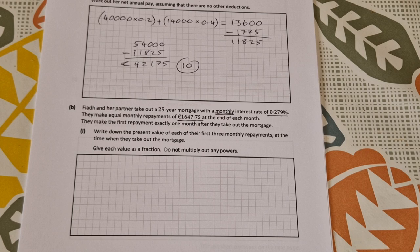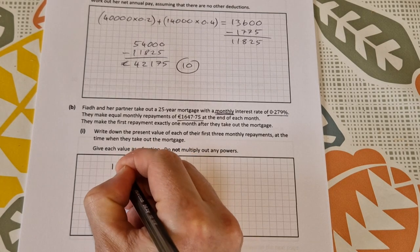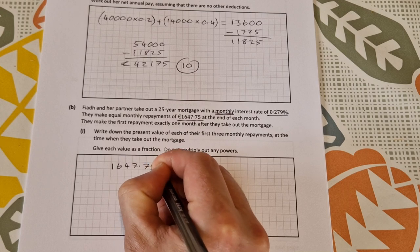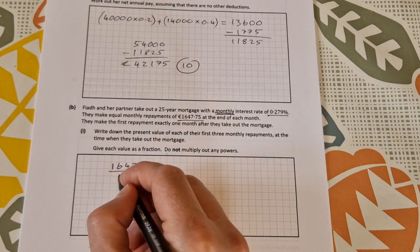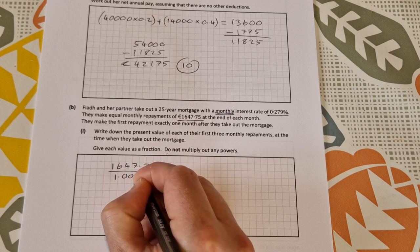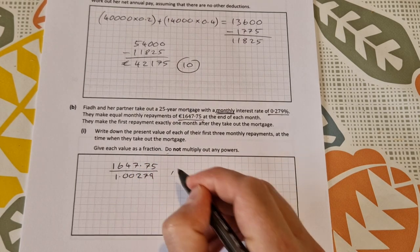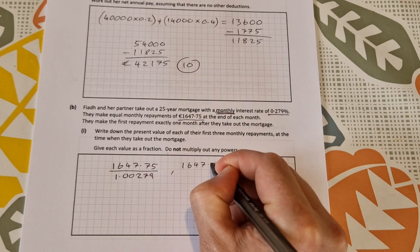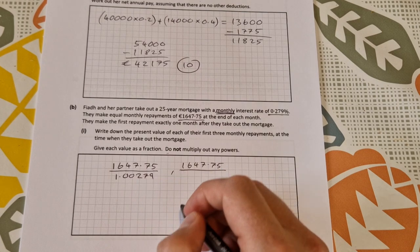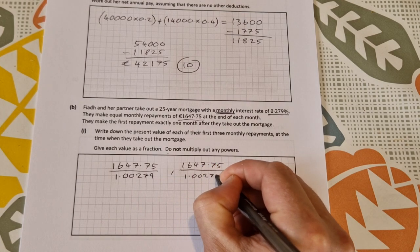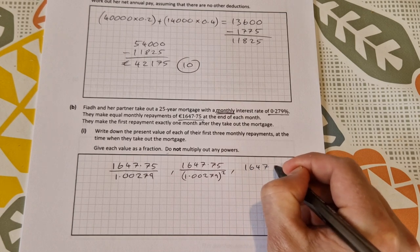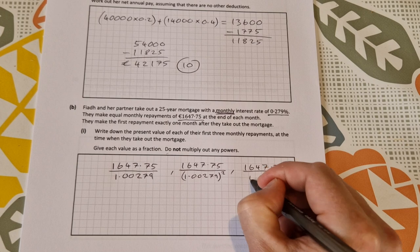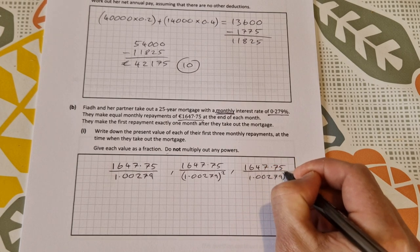Write down the present value of each of the first three monthly repayments at the time when they take out the mortgage. Give each value as a fraction and do not multiply out any powers, which makes it easier for you. So the monthly repayment is 1,674 euro 75 cent. To get the present value one month from now, simply divide by the interest rate as a decimal plus one, so it'll be 1.00279. That's the first one. The second month will be 1,674 euro 75 cent divided by the same thing but to the power of two, 1.00279 to the power of two. And then the third one: 1,674 euro 75 cent divided by 1.00279 to the power of three.